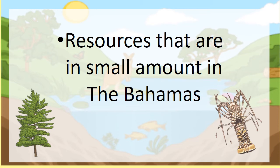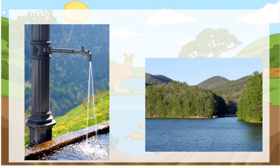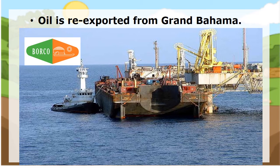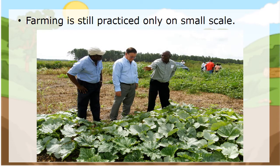Resources that are in small amounts in the Bahamas: we have water, but it is in small amounts. We don't have oil in the Bahamas — we don't drill oil, but we re-export oil. Oil comes here on oil tankers, is stored in the Bahamas for a short while, and then goes out to another destination. Farming is still practiced, but only on a small scale.